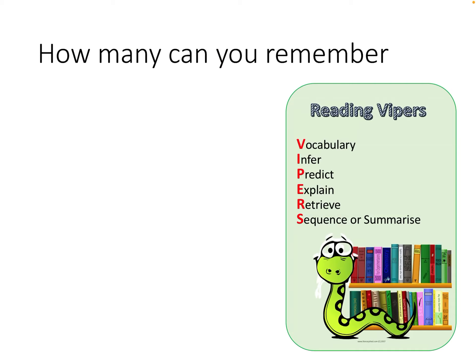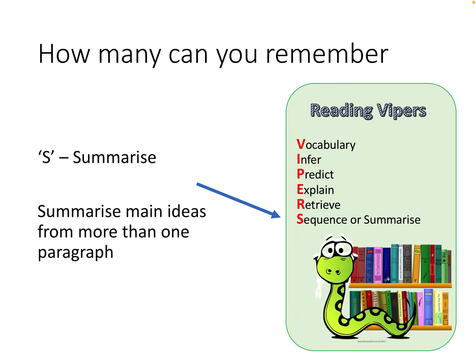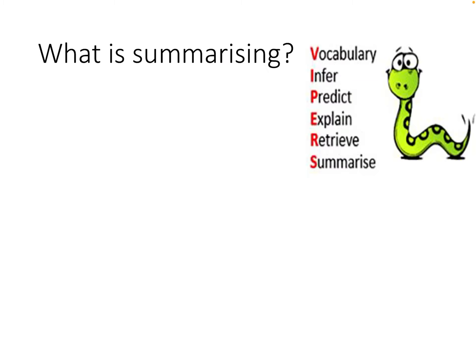We've got V for vocabulary, E for infer, P to predict, E for explain, R for retrieve, S for sequence or summarizing. And today we are of course doing summarize — just get the main ideas of more than one paragraph. Now what exactly does that mean and what skills does it involve? It involves condensing a large amount of information. And what do we mean by condense?